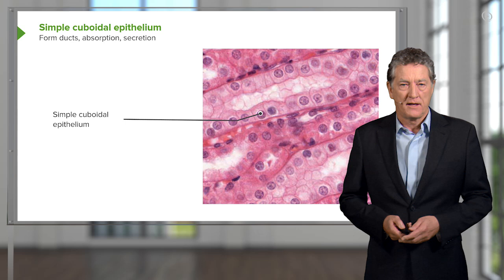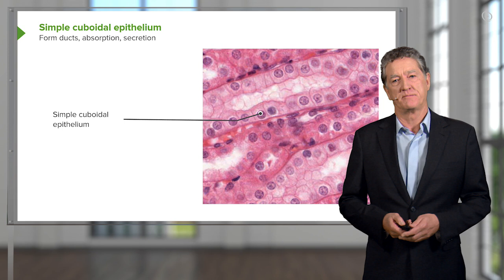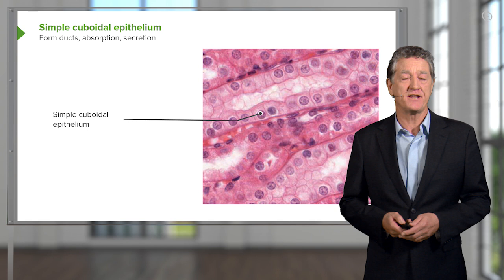Here is an example of a simple cuboidal epithelium. You've seen this picture before. The cells are both the same height, width and depth, hence the cuboidal classification.